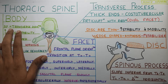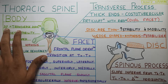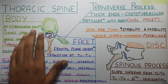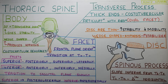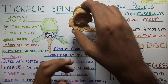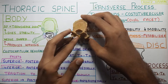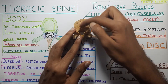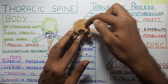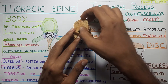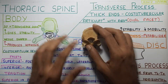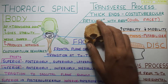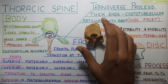Starting with the body, the antero-posterior — that is the AP diameter — is equal to the transverse diameter. The distance from anterior to posterior and transverse is kind of the same, and this gives stability to the vertebra.